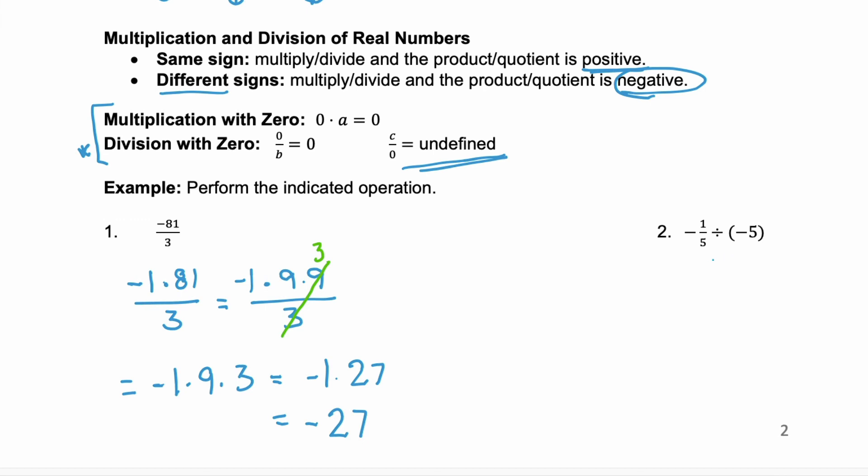In example 2, we have negative 1 fifth and we're dividing by a whole number. Remember, the whole number can be written as a fraction. And dividing a fraction by a fraction, you keep that first fraction and you multiply by the reciprocal of the second fraction. Now notice we have a negative times a negative. So we know it's going to be positive, so we can change this to 1/5 times 1/5. And that would equal 1 over 25.